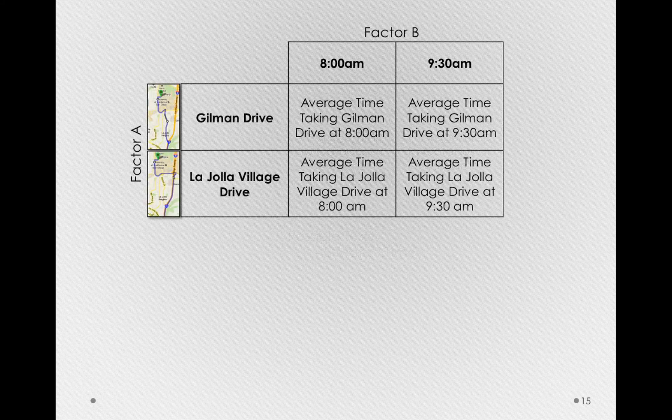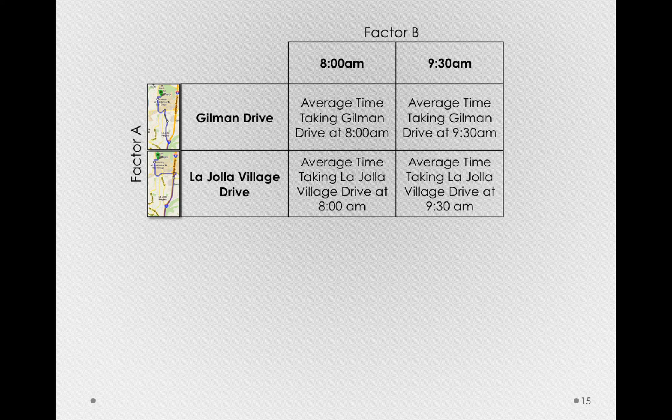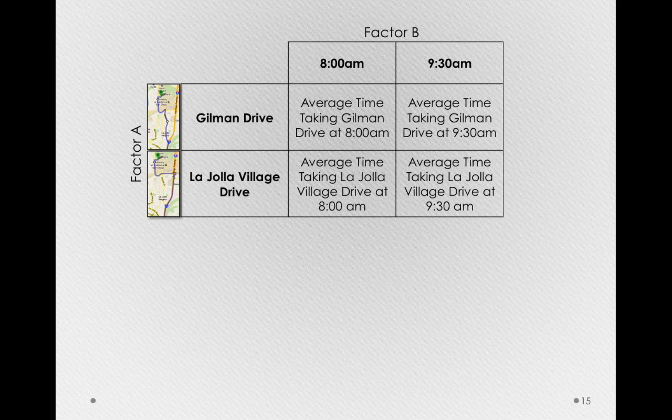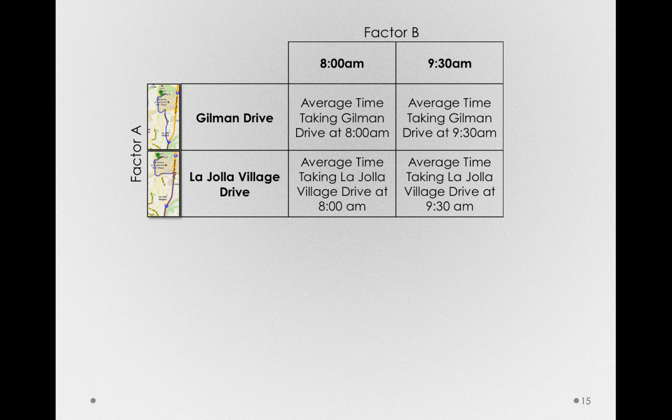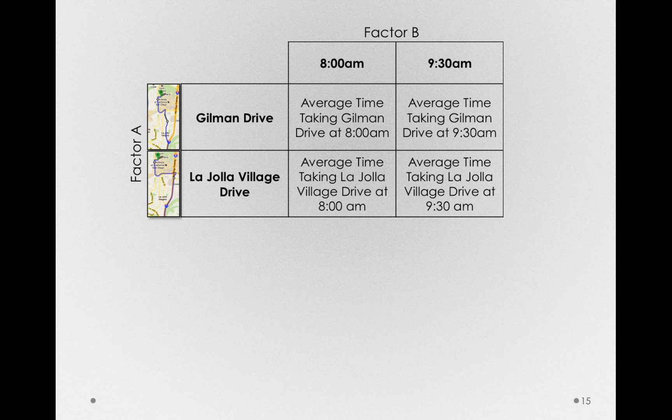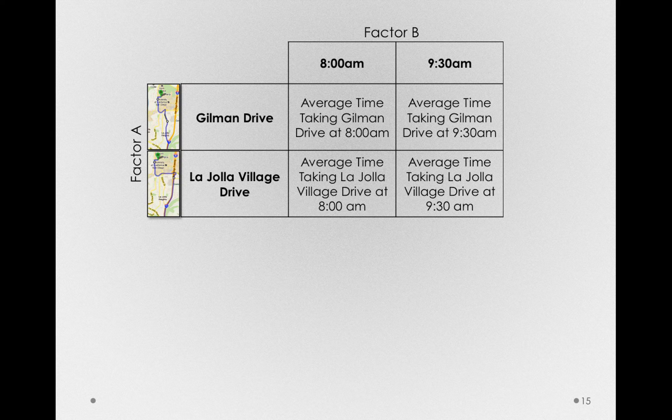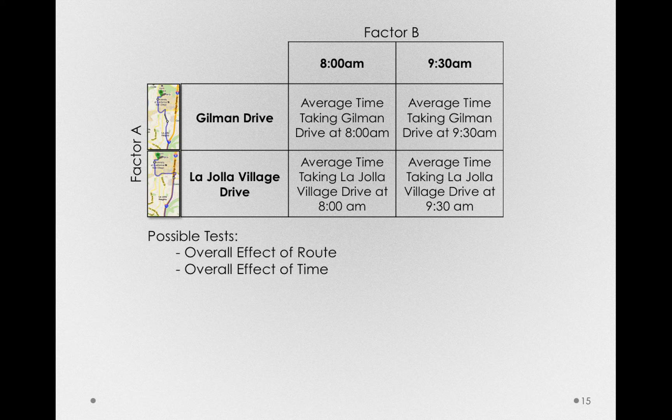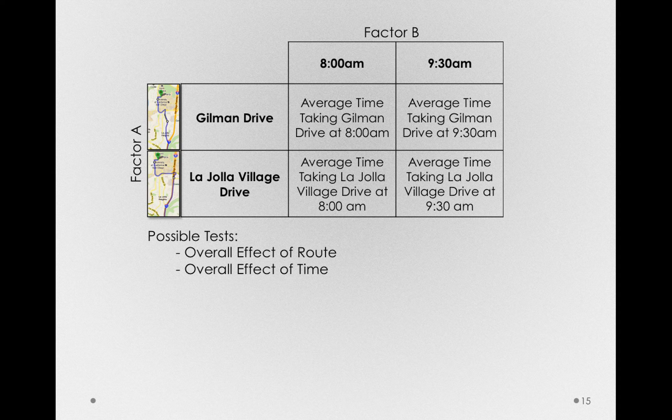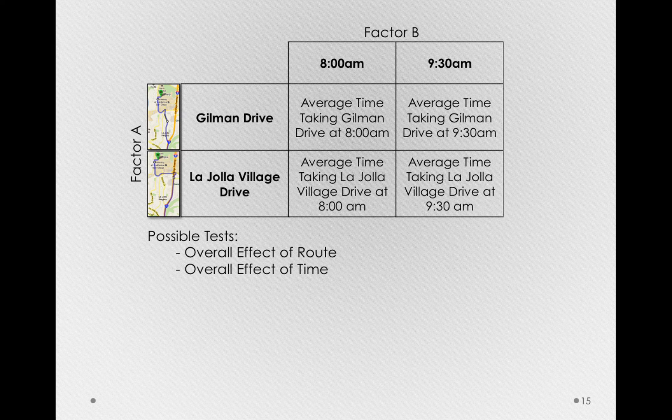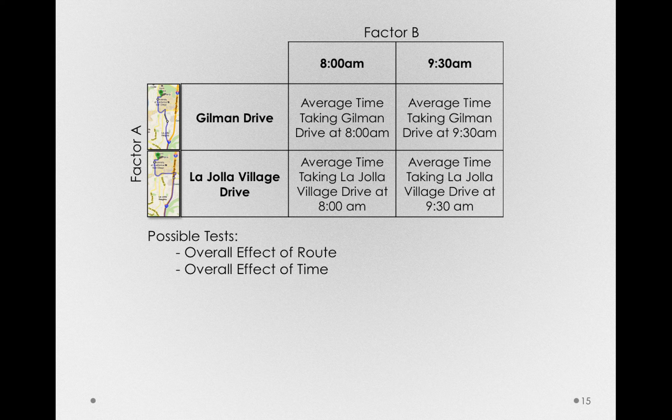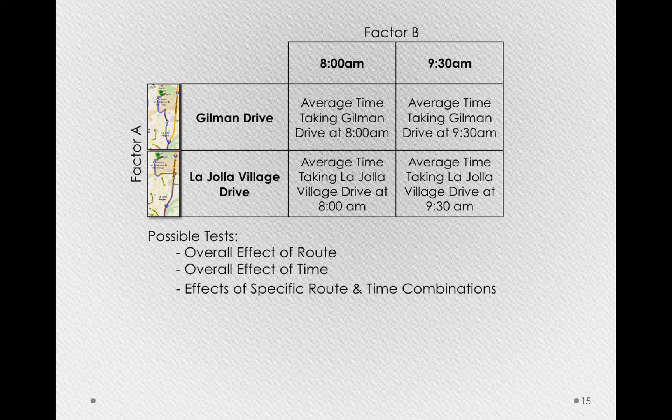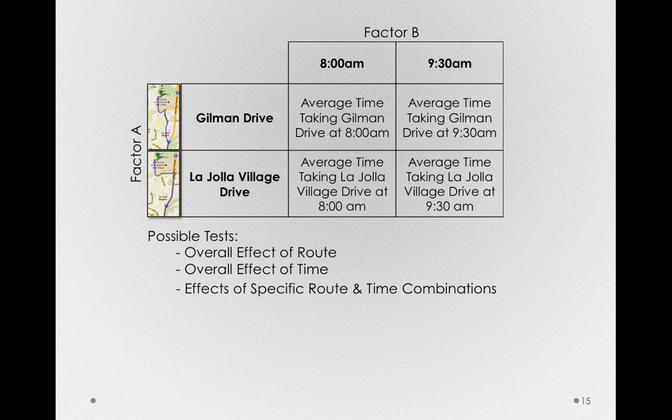Now, let me step back. If I'm measuring these factors in a multi-factor design, what I will do is measure each cell in this grid. That is, Gilman Drive at 8am, Gilman Drive at 9:30, La Jolla Village Drive at 8am, and La Jolla Village Drive at 9:30. Notice that I still have the data to measure those first two effects, the overall effect of route and the overall effect of time. But, by measuring these two factors together, I get an important third effect, the effect of the specific route and time combinations.